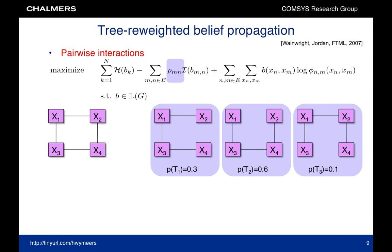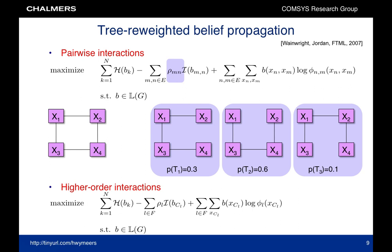Now, to extend tree-weighted belief propagation beyond pairwise interactions, it is more natural to work with factor graphs, where we then have factor appearance probabilities. After some straightforward manipulations, we find the following expression. The objective function again involves single variable entropies, and mutual information regarding groups of variables. These are then weighted with so-called factor appearance probabilities, indicating with which probability a certain factor belongs to the set of trees.